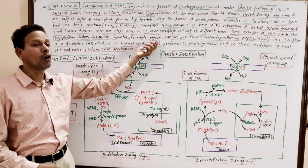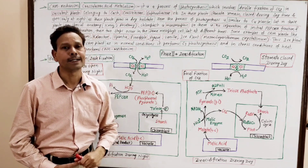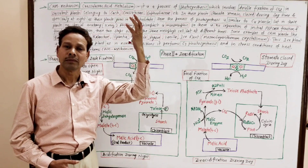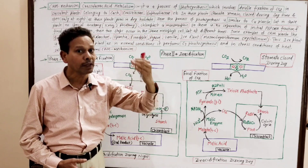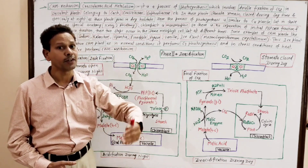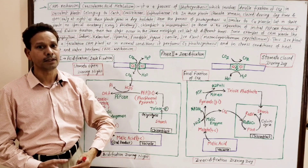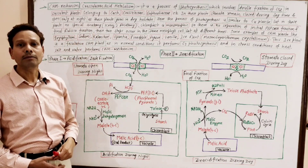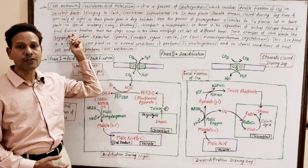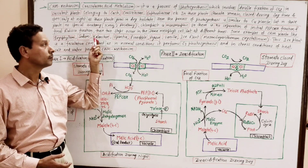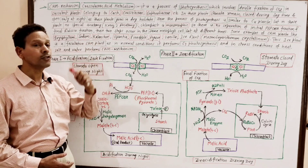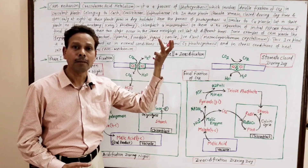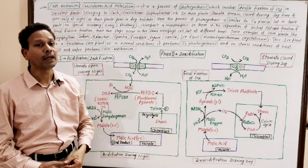Some common examples of CAM plants — note down. These plants grow in xeric conditions and dry habitats: Bryophyllum (Patharchatta), Sedum, Kalanchoe, Opuntia, pineapple, agave, and vanilla.